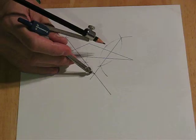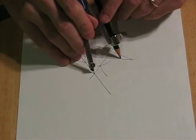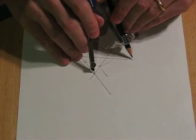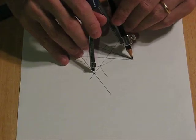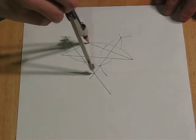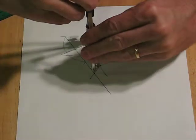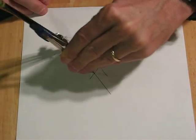And if I put the center of the compass there, and stretch it out to one corner, I should be able to make a circle that goes through all the corners. So let's see, there we go, very nice, and on around here. Good.